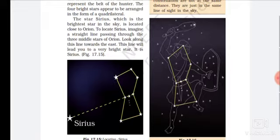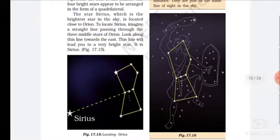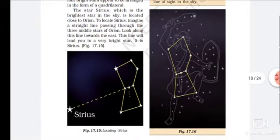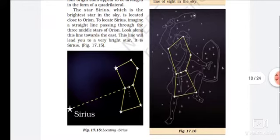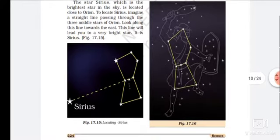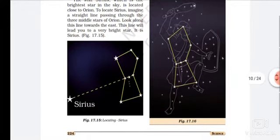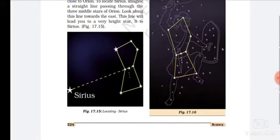Imagine a straight line passing through the three middle stars of Orion. Look along this line towards the east. This line will lead you to a very bright star. It is Sirius.